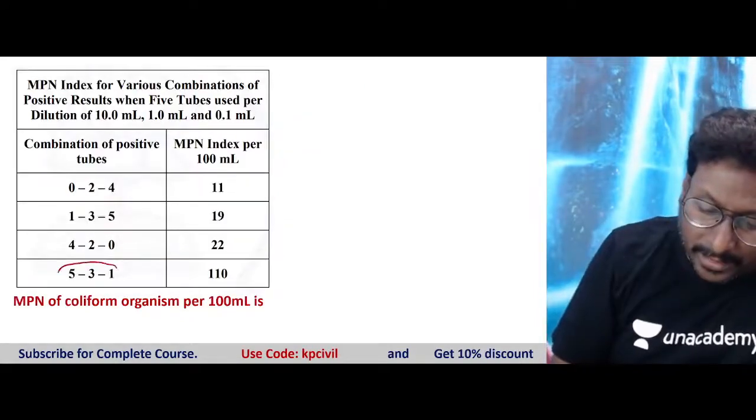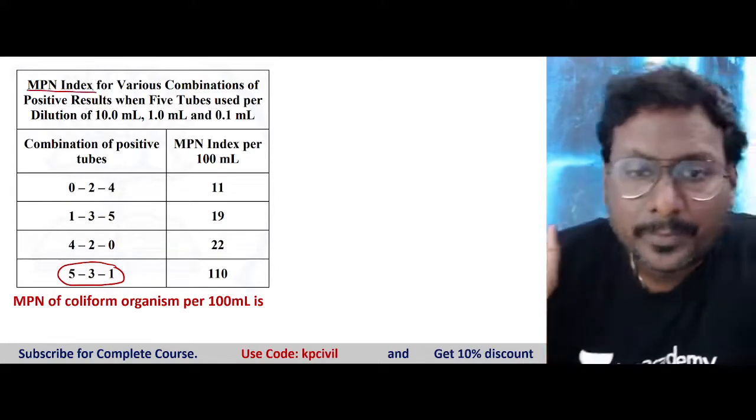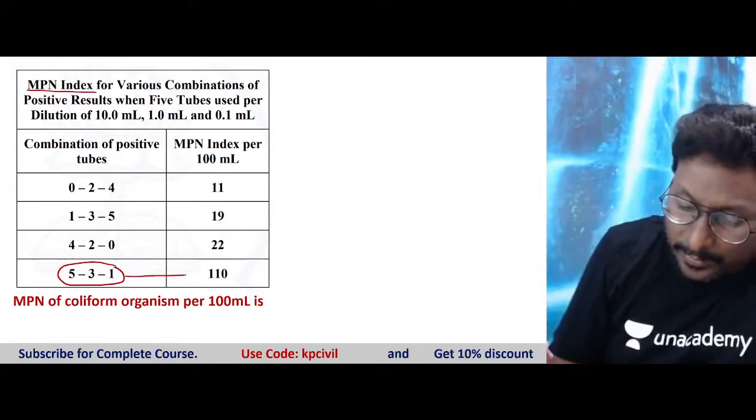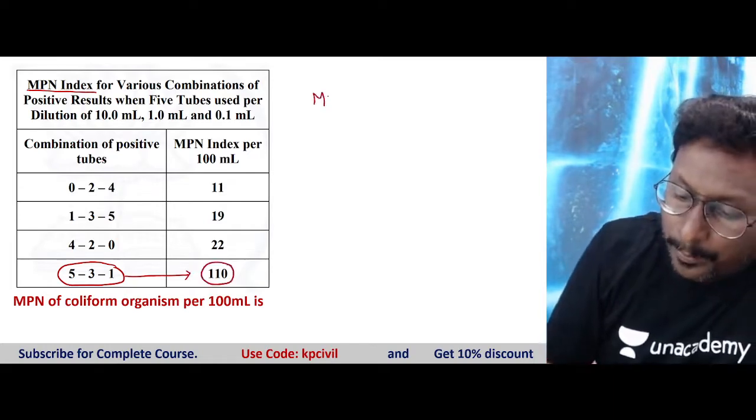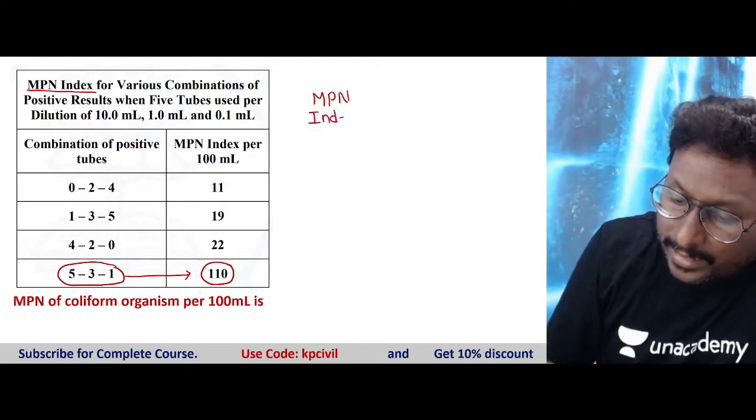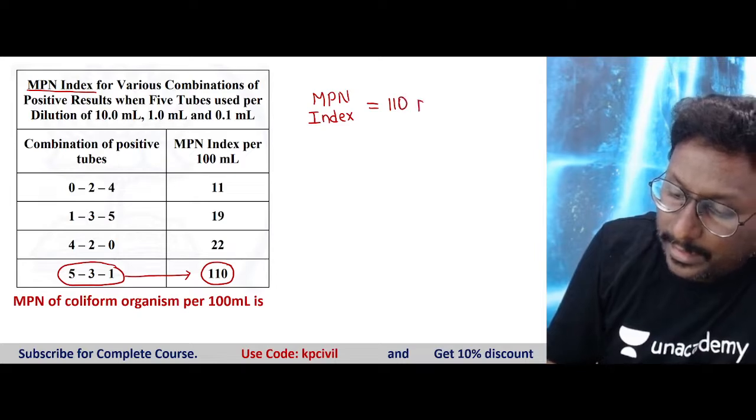Select the same 5, 3, 1 in the second table. The second table is the MPN index table. So that 5, 3, 1 from the MPN index table gives you an MPN index value, which is 110 per 100 ml.